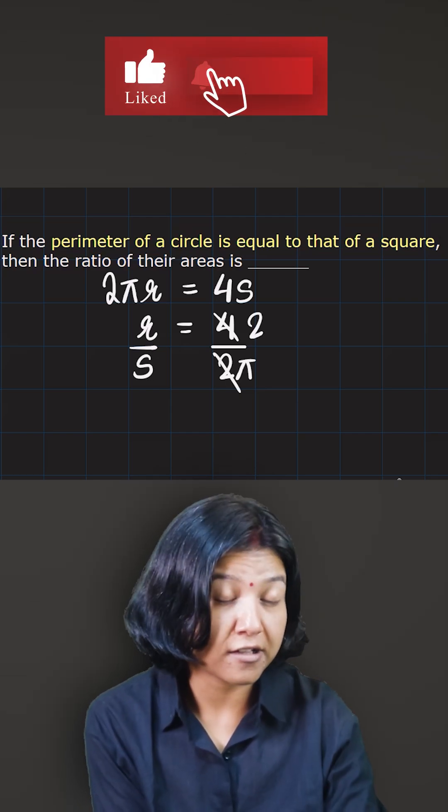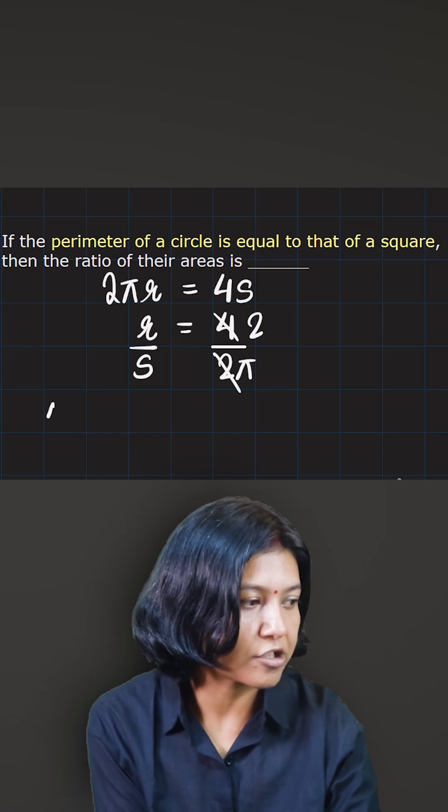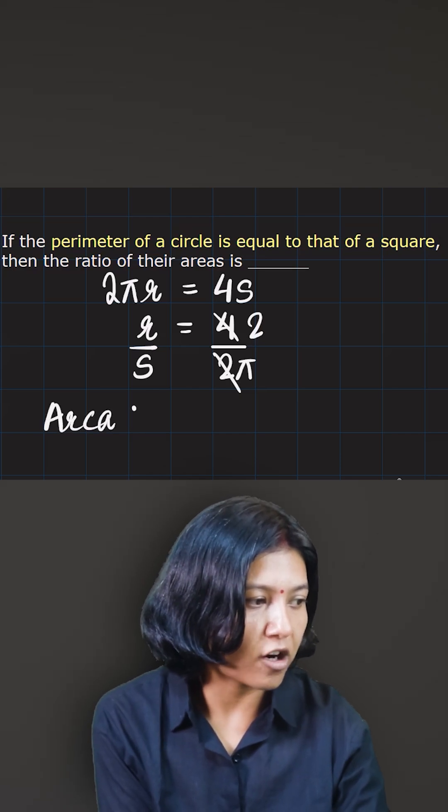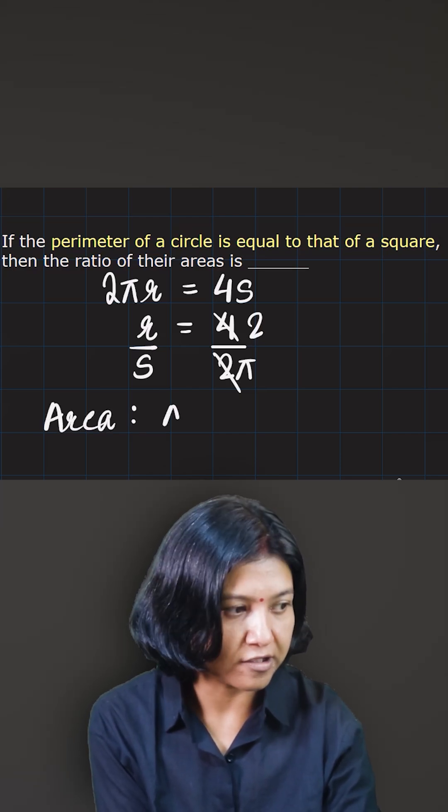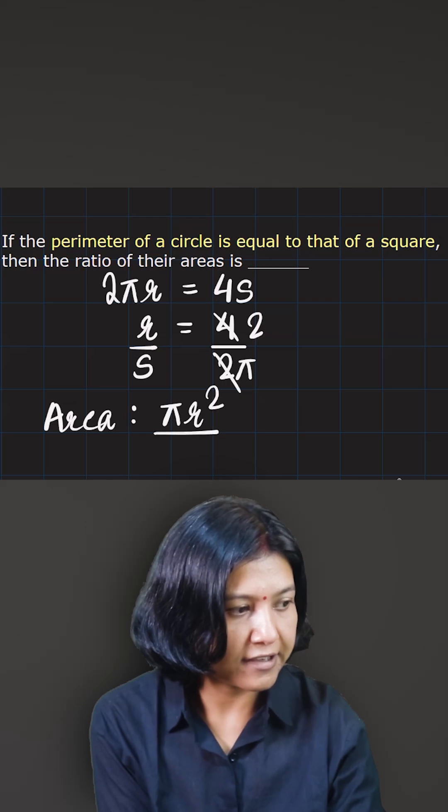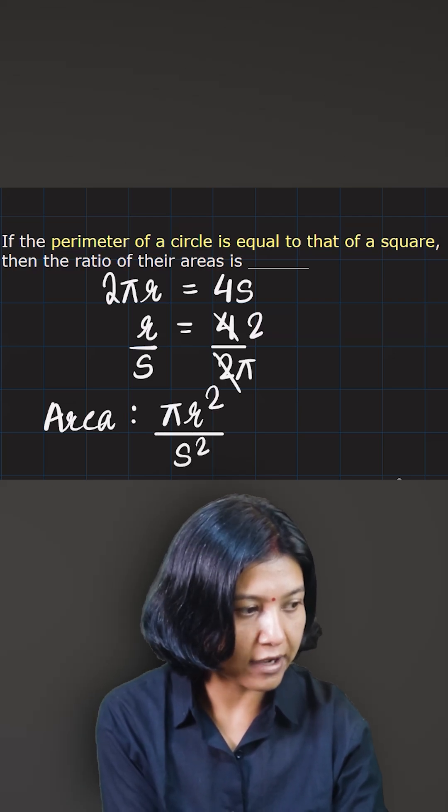So when I know the radius and side ratio, I can find the area ratio by simply taking the formula. Formula for area of a circle is πr² divided by area of a square which is s².